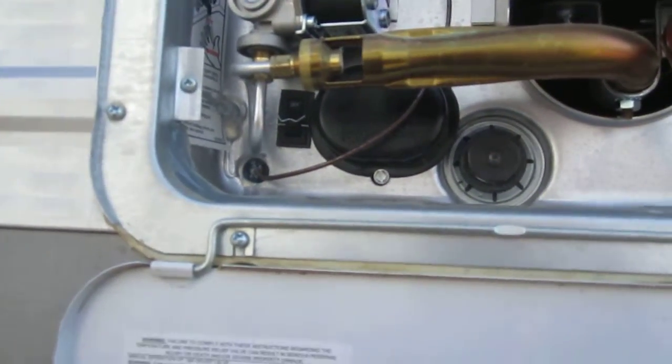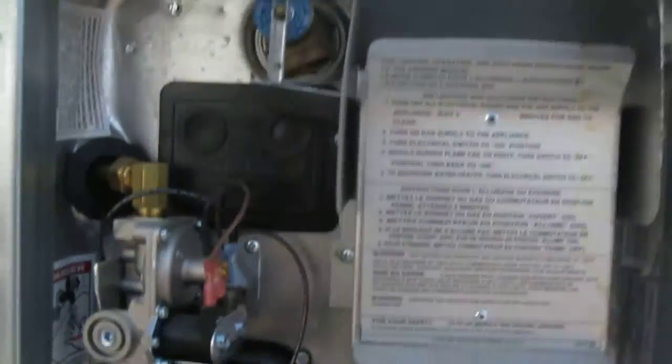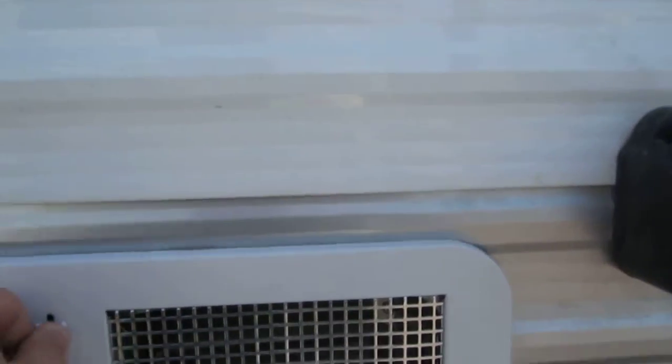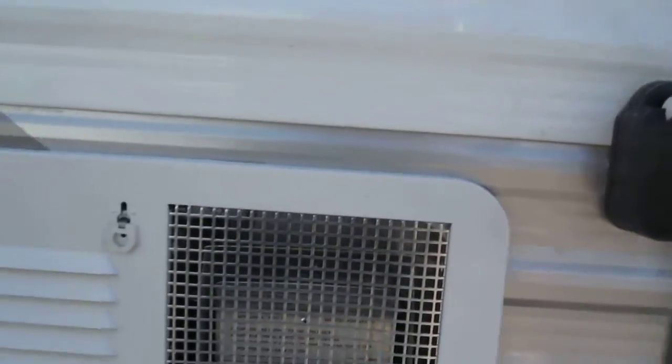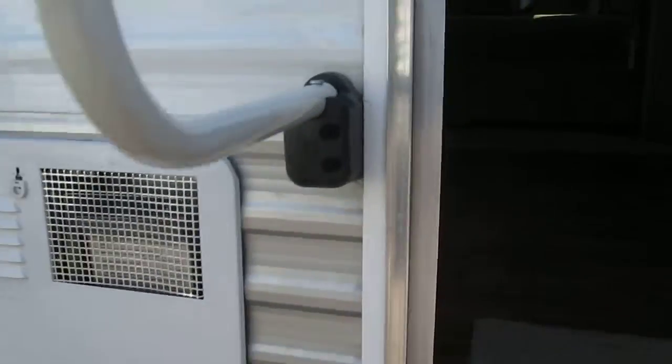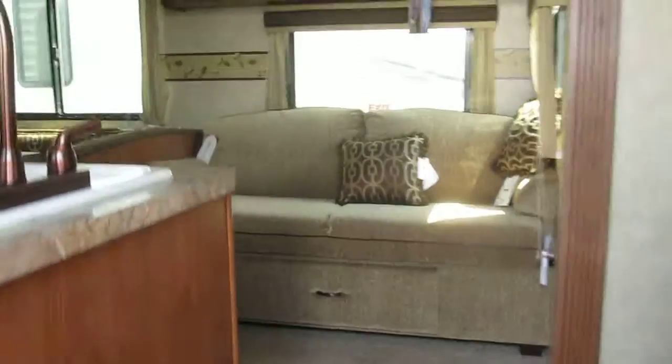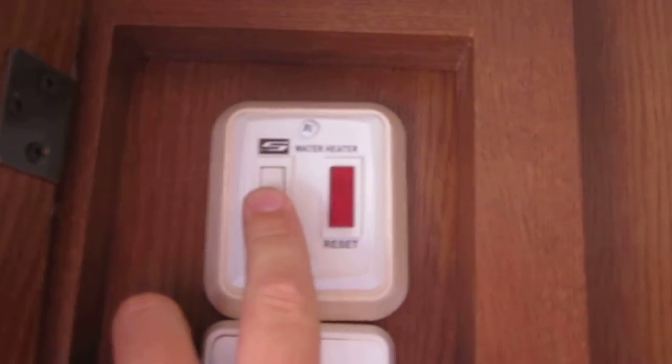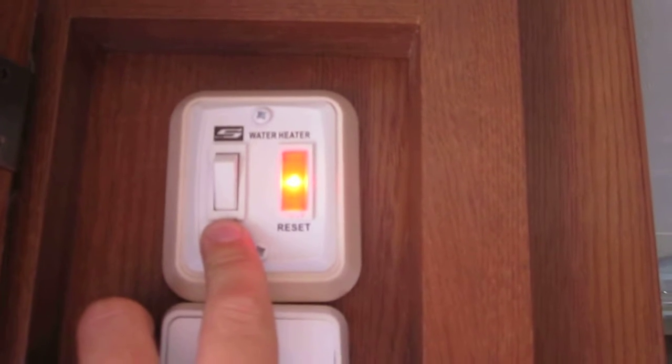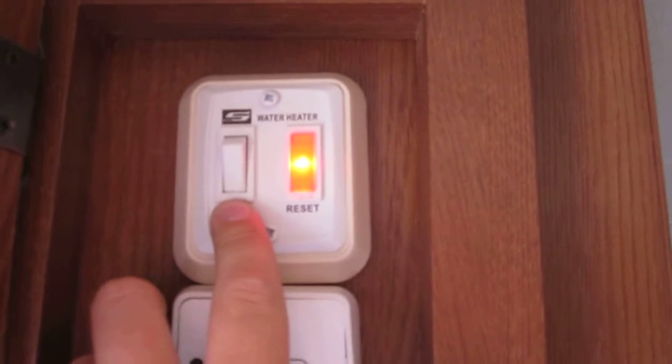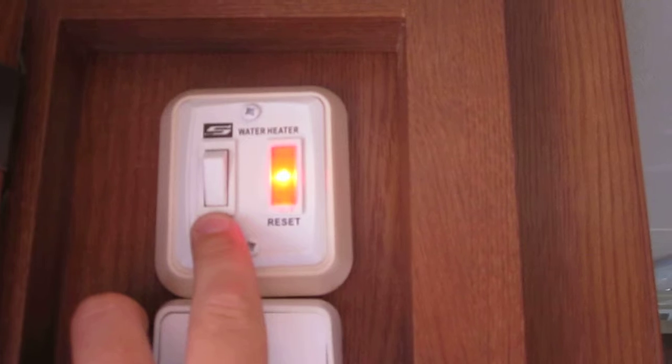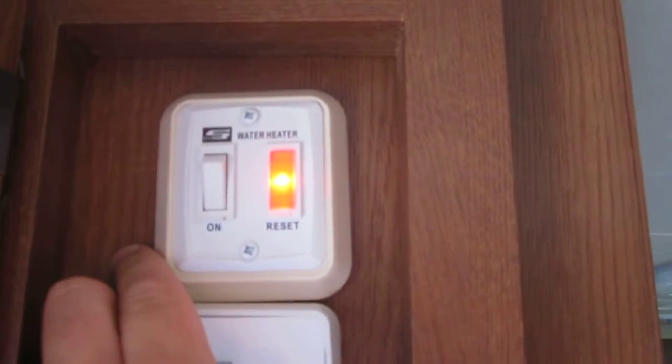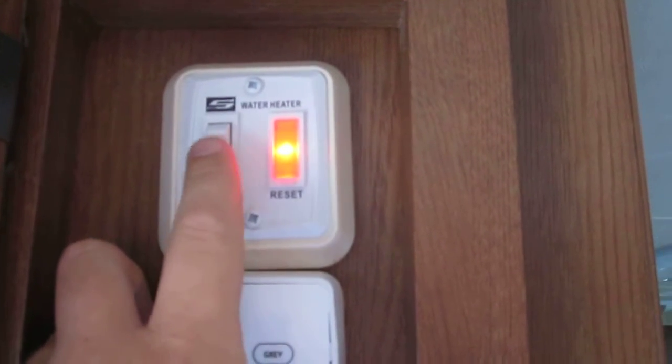The gas heating element switch is inside the camper. That's this one right here. Simply push down, the red light will come on like so. When the red light goes out the water heater is lit and about 20 minutes later you'll have hot water.